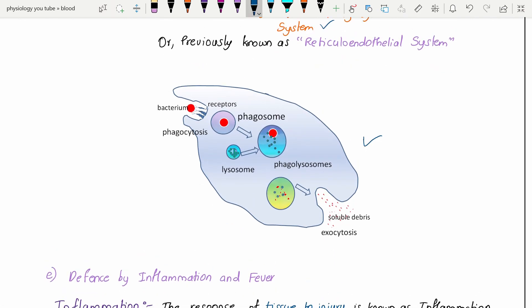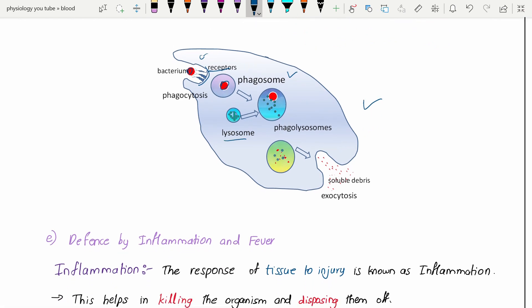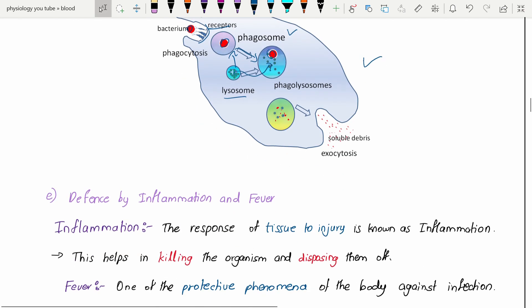Phagocytosis in brief: here is the bacterium, receptors are there, formation of pseudopodia, formation of the phagosome which contains the bacterium. The lysosome which has different lytic enzymes is fused with the phagosome to form the phagolysosome. These lytic enzymes are released which lyse the bacterium, and there are degraded products which are excreted by exocytosis.